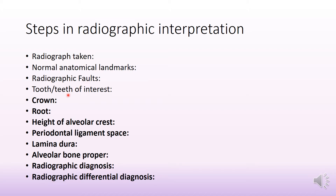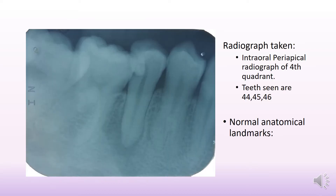And then specifically for the teeth of interest: details regarding the crown, root, height of alveolar crest, periodontal ligament space, lamina dura, alveolar bone proper, radiographic diagnosis, and then arriving at the differential diagnosis. The case we are discussing today is of the fourth quadrant and the teeth seen are the 44, 45, and 46.